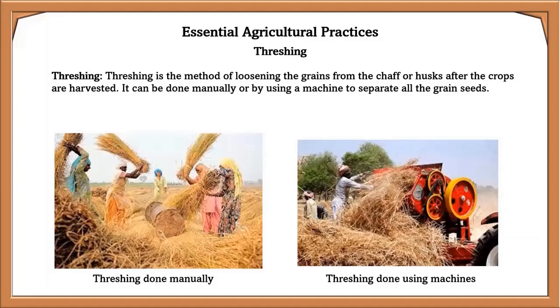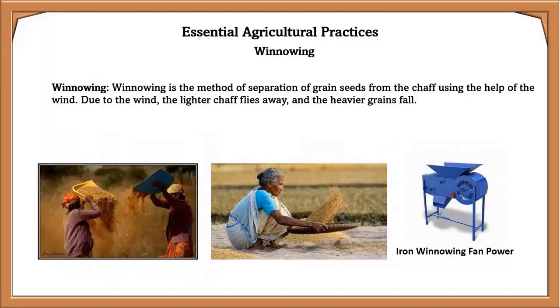Winnowing is the method of separating grain seeds from the chaff using wind. Due to the wind, the lighter chaff flies away and the heavier grains fall down.